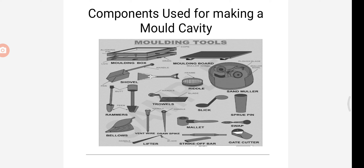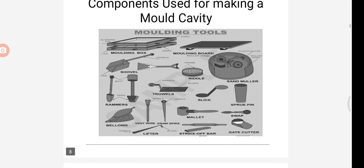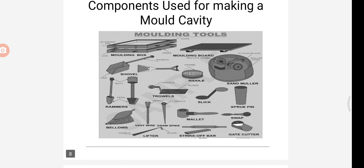Next we can see the screw pin. It is a tapered cylindrical wooden piece used for making a sprue hole in the mold. The size of the screw pin depends upon the size of the mold. These are all the components used for making a mold cavity.